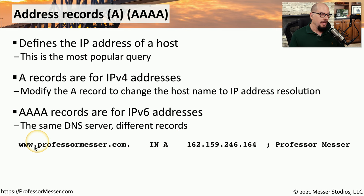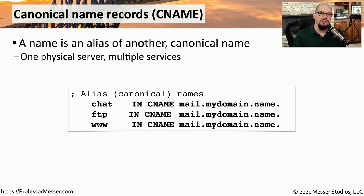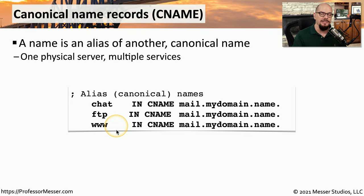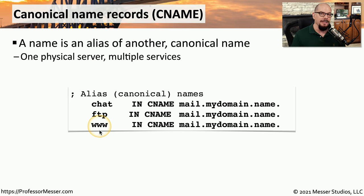If somebody queries this server for the IP address of www.professormesser.com, the DNS server looks through the configuration file, finds the address record, and reports the IP address back. There may be times when one IP address handles many different services — chat, file transfer, web, and mail — all on the same IP. Instead of putting separate address records into our DNS server, we'll use canonical name records, or CNAME records. These provide an alias to an already existing server. So if I have a device called mail.mydomain.name, I can create CNAME records for chat, FTP, and www — all resolving back to mail.mydomain.name.